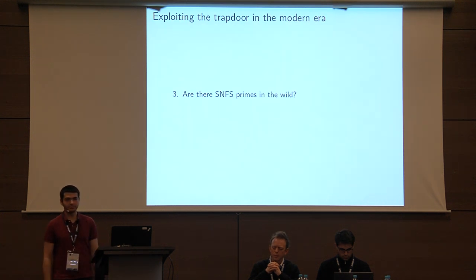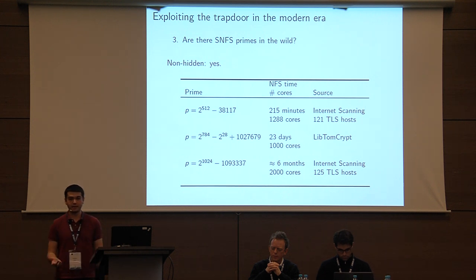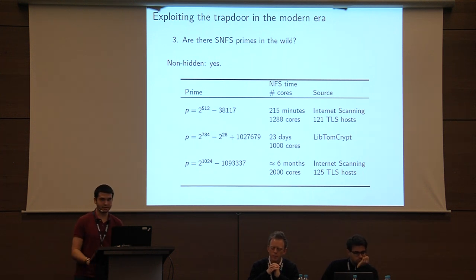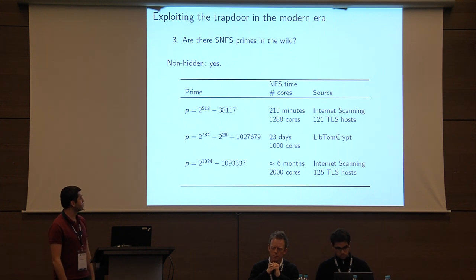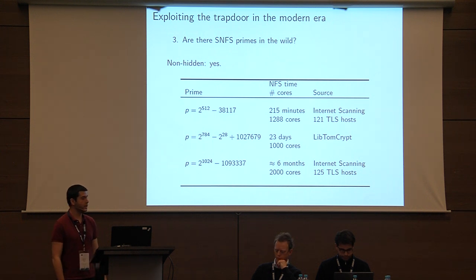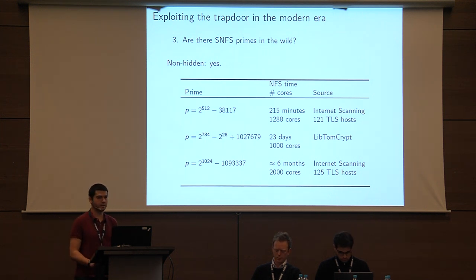Are there actual primes being used in the wild that are amenable to SNFS? The answer is yes — there are some primes not hidden at all, namely primes close to powers of 2. We found a 512-bit prime and a 1024-bit prime via internet scanning of publicly visible services, with about 120–130 hosts still using these primes today. For the 512-bit prime, running the number field sieve takes just over 3 hours. We also ran the special number field sieve computation for a 784-bit prime discovered baked into a crypto library, which took about 23 days on our cluster. We did not run SNFS for the 1024-bit prime but estimated it would be three or four times harder.